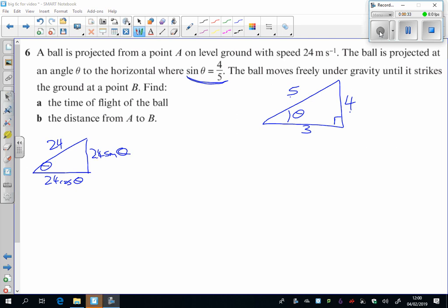So 24 times by 4 fifths, that's 19.2, and 24 times by 3 fifths, that is 14.4.